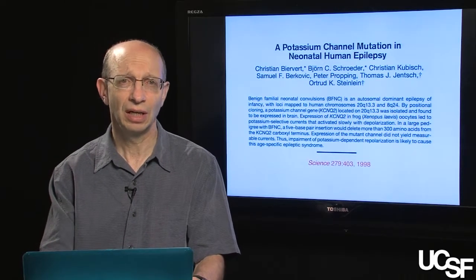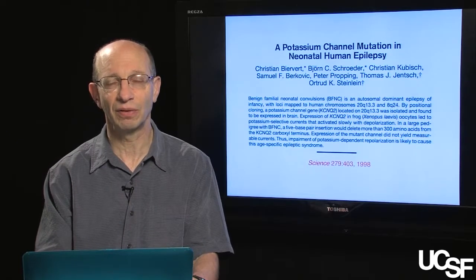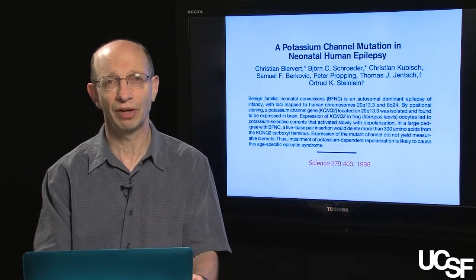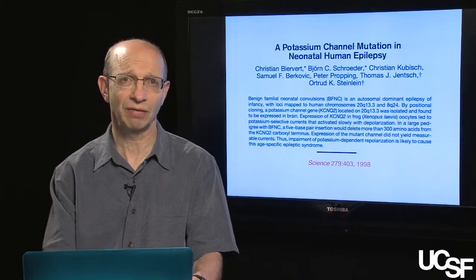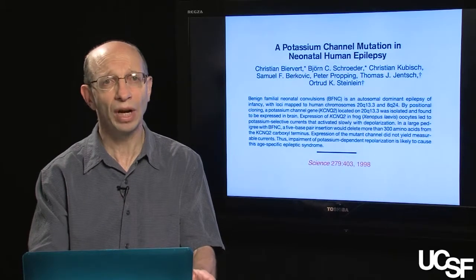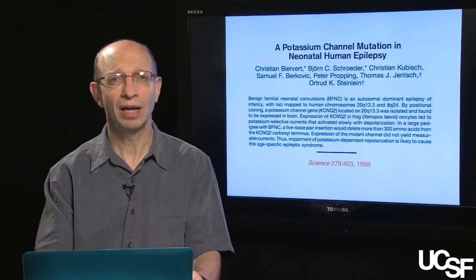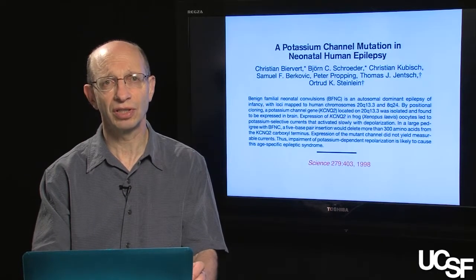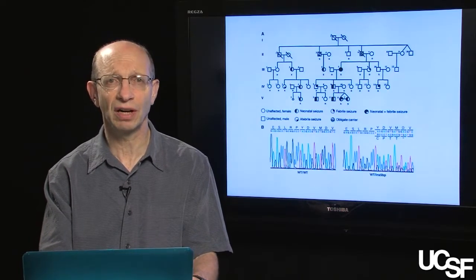Let me finish this module with one final example of a cause of seizures and epilepsy, and that is mutations in genes. Arguably one of the most exciting aspects of epilepsy research over the last 20 to 25 years has been the discovery of many dozens of gene mutations that are the basis of epilepsy in humans. This is just one example of an early finding. This was the discovery of the mutation in a potassium channel that is the basis of a certain syndrome of neonatal human epilepsy.